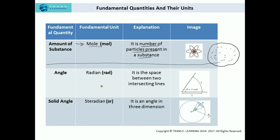Now let's talk about the complementary quantities and units. The two complementary quantities introduced were angle and solid angle. Angle is the space between two intersecting lines — the part where the two lines intersect is known as an angle, and the unit in which angle is measured is radian.